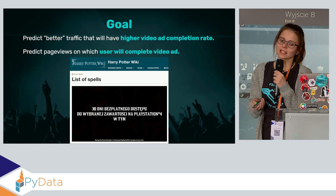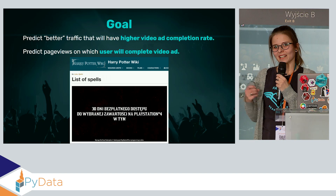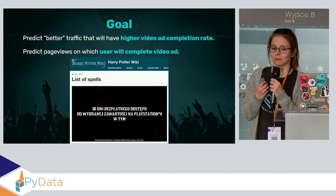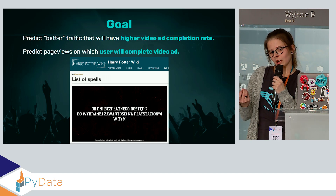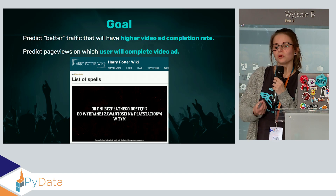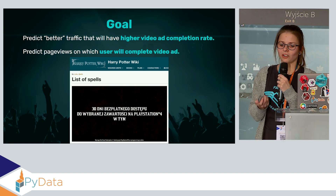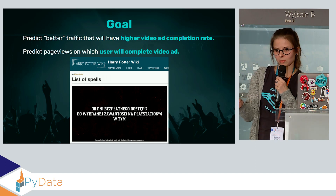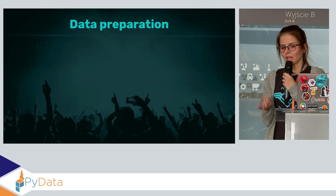We would like to have better traffic — higher video completion rate. In the case of machine learning, we have to rephrase it: on each page view that has video, we would like to predict if the user will complete the video ad or not. So we rephrased it to a binary classification problem. Now we have our idea, so let's move to data preparation.